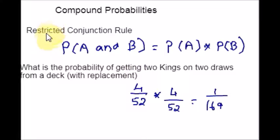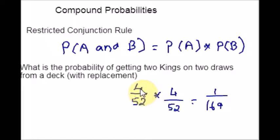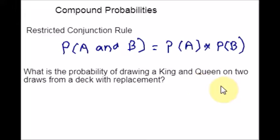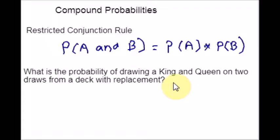When applying this restricted conjunction rule, you should make sure to consider all favorable combinations. Here is a practice problem: what is the probability of drawing a king and a queen on two draws from a deck with replacement? There are two ways to be successful — king then queen, or queen then king. So this problem involves a disjunction of outcomes, meaning this formula cannot be applied. We can apply the general conjunction rule instead.